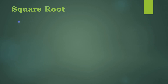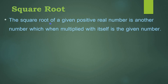The square root of a given positive real number is another number which, when multiplied with itself, gives that number. So the square root of 16 — can you tell us the answer? It is 4, because 4 multiplied by 4 gives the original number.